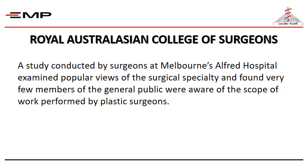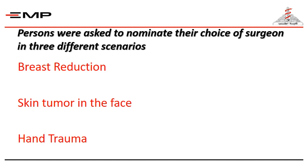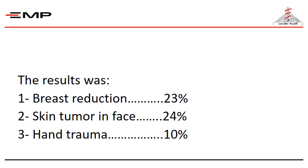One of these studies was done by the Royal Australian College of Surgeons, where persons were asked to nominate their choice of surgeon in three different scenarios: breast reduction, skin tumor in the face, and hand trauma. The results were: in breast reduction, only 23% referred the patient to a plastic surgeon; skin tumors, 24%; and in hand trauma, only 10% referred the patient to a plastic surgeon.